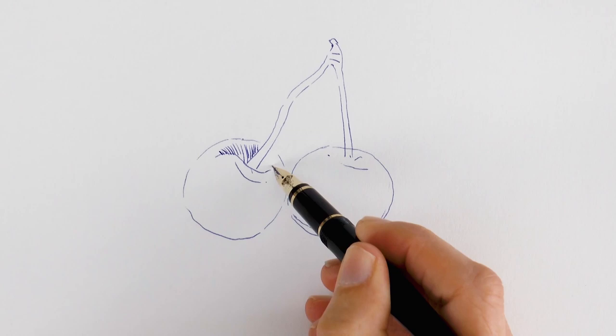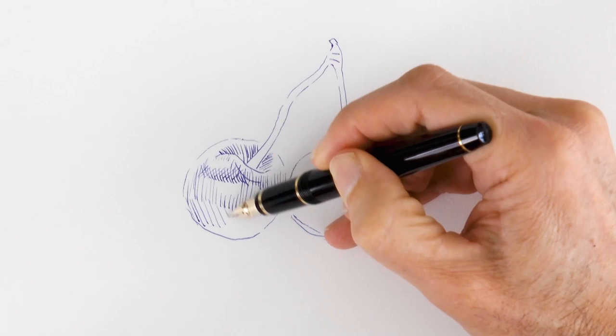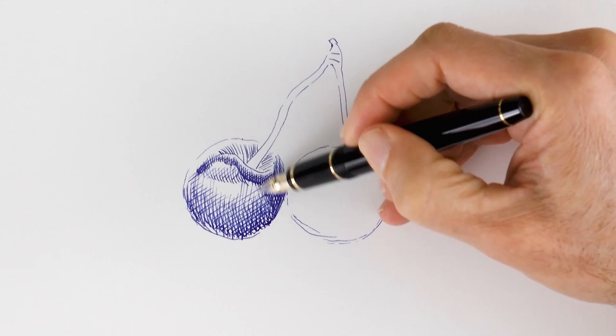Now let's do the shading with hatching and cross hatching. Trying to follow more or less the direction of the surface, of the volume. And we go over again the darkest areas, like so. And let's switch to different directions on the lines.